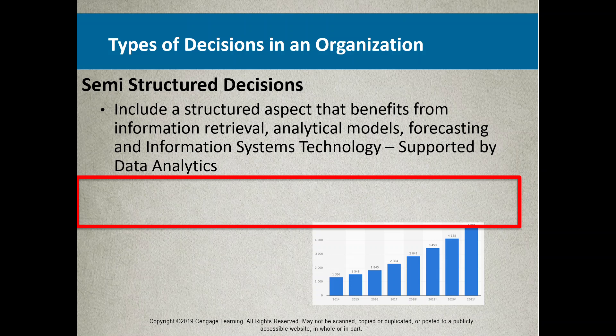We've talked about forecasting with business intelligence and information system technologies. When working with certain managing information systems, you can generate analytical models based on the data you're collecting within the MIS system to help forecast and make a decision. That's why they call it a semi-structured decision — the analytics will change, but based on the data, you have some structured scaffolding to decide what to do.